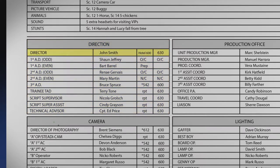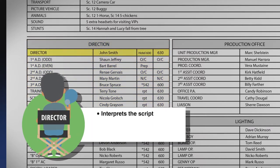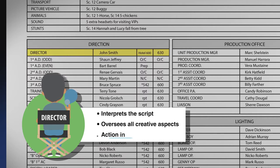The director interprets the script and applies the interpretation to all of the creative aspects of the entire project. During pre-production, the director consults and works with all departments and casts and rehearses with the actors. On set, the director works with the actors and controls the action in front of the camera.